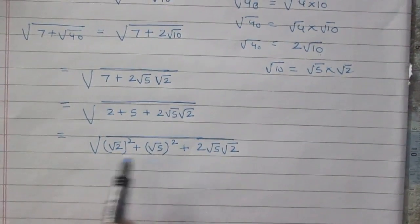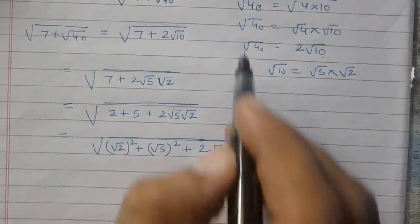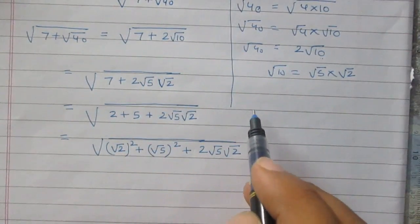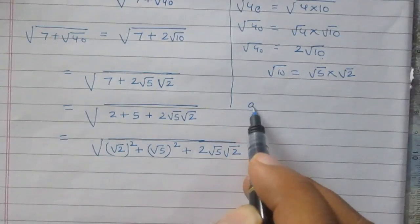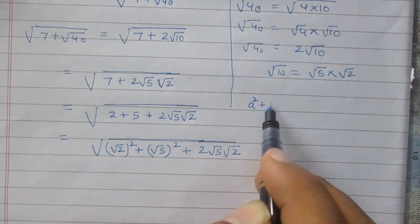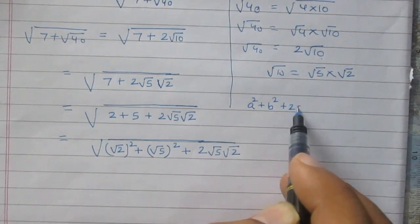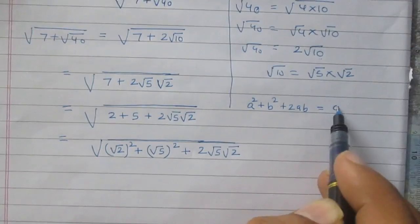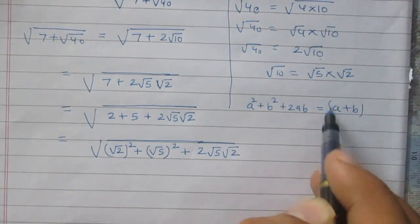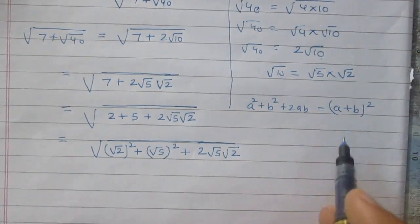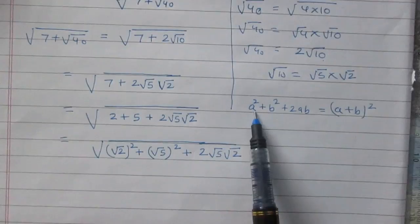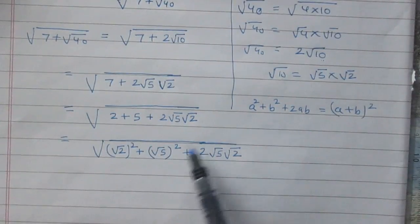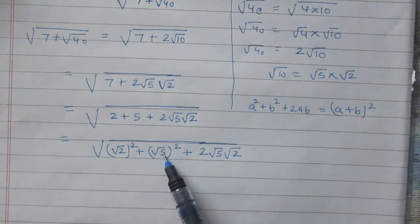See it carefully — I want to remind you about an identity: a squared plus b squared plus 2ab is equal to a plus b whole squared. Here, a stands for square root 2 and b stands for square root 5.